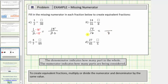Again, focusing on the denominators, notice how sixteen divided by two is equal to eight. So if we also divide the numerator by two, we can create an equivalent fraction. Fourteen divided by two is equal to seven, which means fourteen-sixteenths is equivalent to seven-eighths.